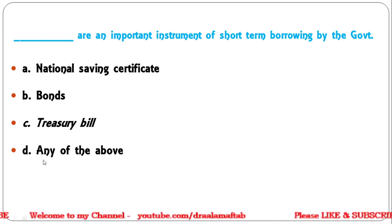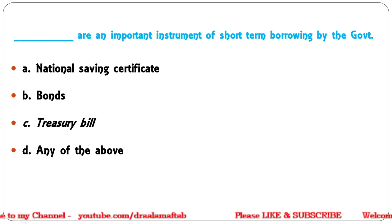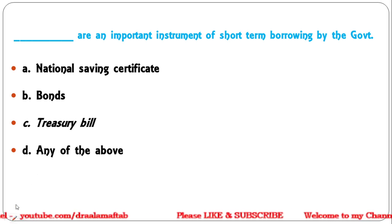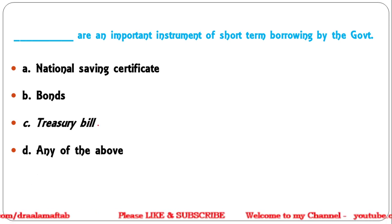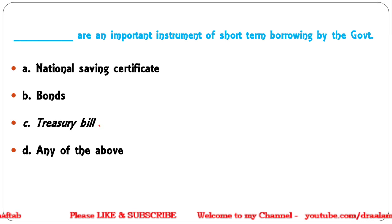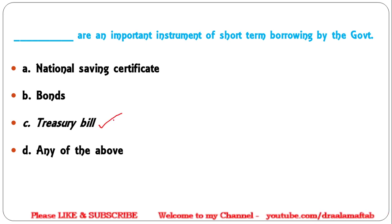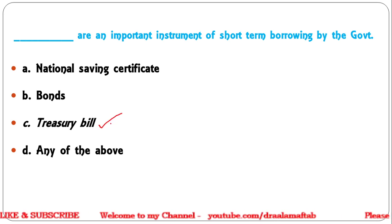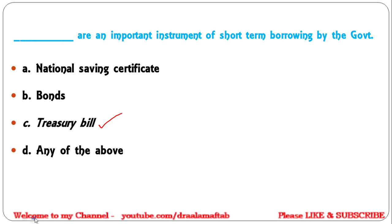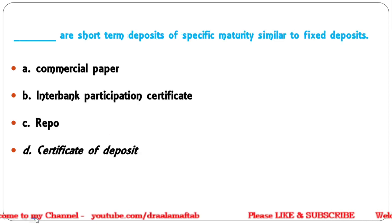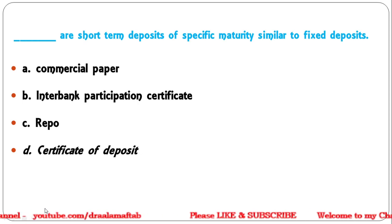Next question: what are important instruments of short-term borrowing by the government — national savings certificates, bonds, treasury bills, or any of the above? The correct answer is treasury bills. The minimum period is 91 days.